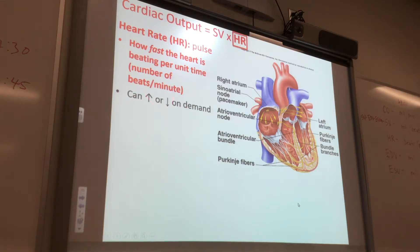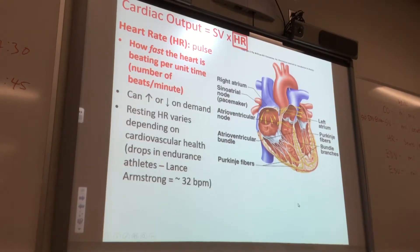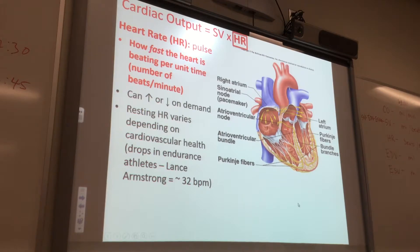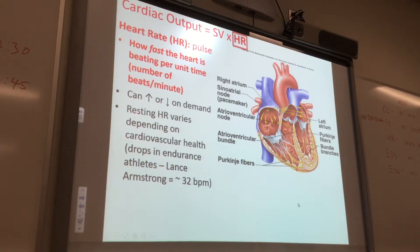Heart rate is the number of beats per minute. You can increase or decrease it — sympathetic will increase heart rate, which means parasympathetic decreases it. Lance Armstrong — even though he's a big cheater — his resting heart rate is about 32. That's really low, a really strong heart, pumping out a lot of blood per beat.